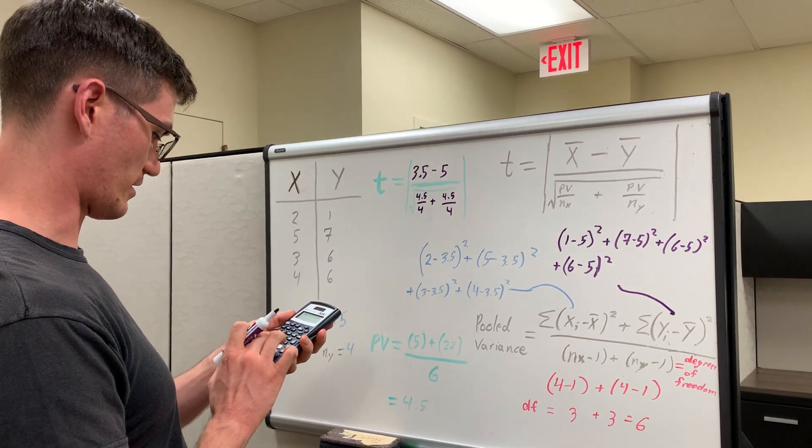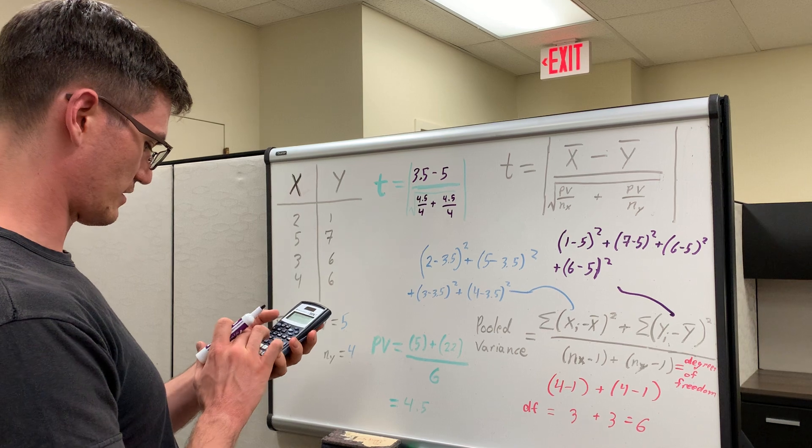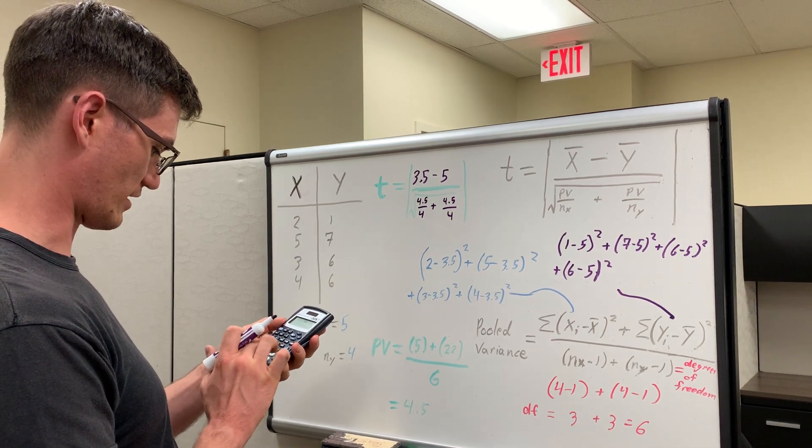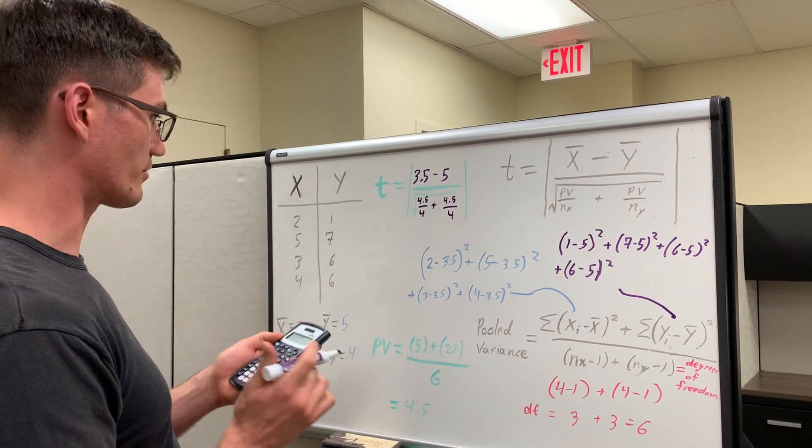Alright, and that turns out to be 2.25. Square root of 2.25 is equal to 1.5.